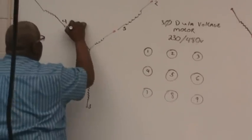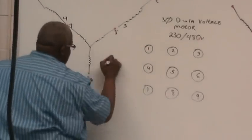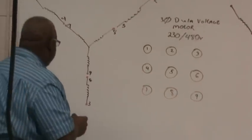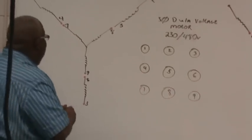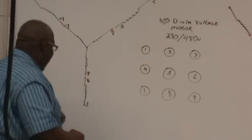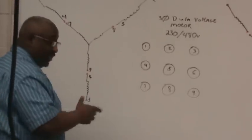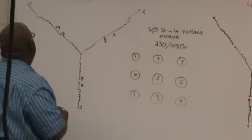Again, seven, eight, and nine. So I have marked my nine taps or my nine terminals that are hanging out of the three-phase motor.